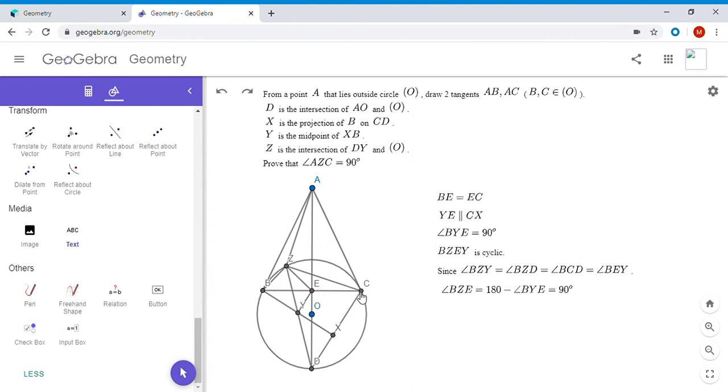And the easiest way I feel like is to show that angle ACZ is equal to angle AEZ. That would get us there. Okay, so how do we show that angle ACZ is equal to angle AEZ? Well, we have enough information now that an angle chase will solve the problem.